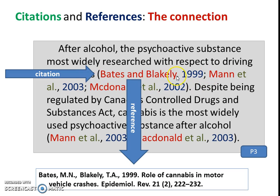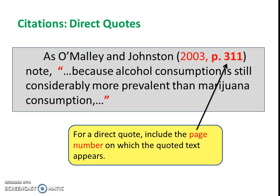So we can see the connection — here we have the citation 'Bates and Blakely 1999,' and here we have the full reference. Sometimes we have direct quotes, and when we have a direct quote we need to put in the page number. So 'O'Malley and Johnson, 2003' — that's when the article was published — the quote comes from page 311, and then we put quotation marks around it, so it's clear those are the exact words of O'Malley and Johnson.